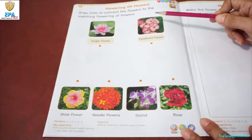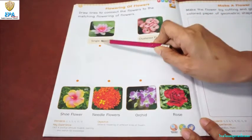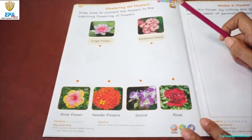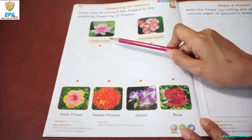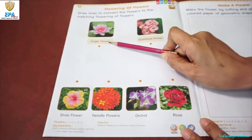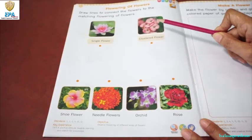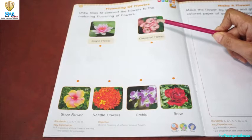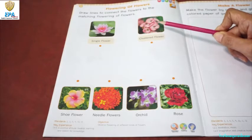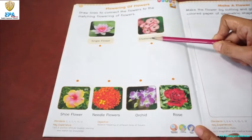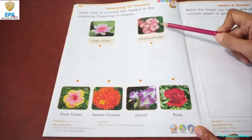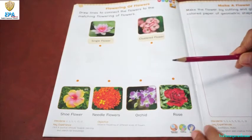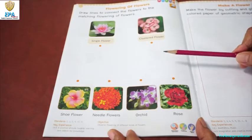There are examples of a single flower and a clustered flower. A rose is an example of a single flower, and a jasmine flower is an example of a clustered flower, just like this one.